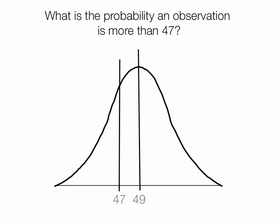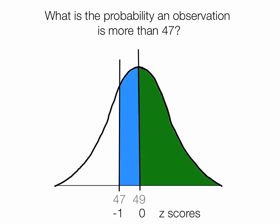What is the probability an observation is more than 47? We take the blue area plus the green area, 0.34 and 0.50. We add those together. 0.34 plus 0.50 is equal to 0.84, or 84%.